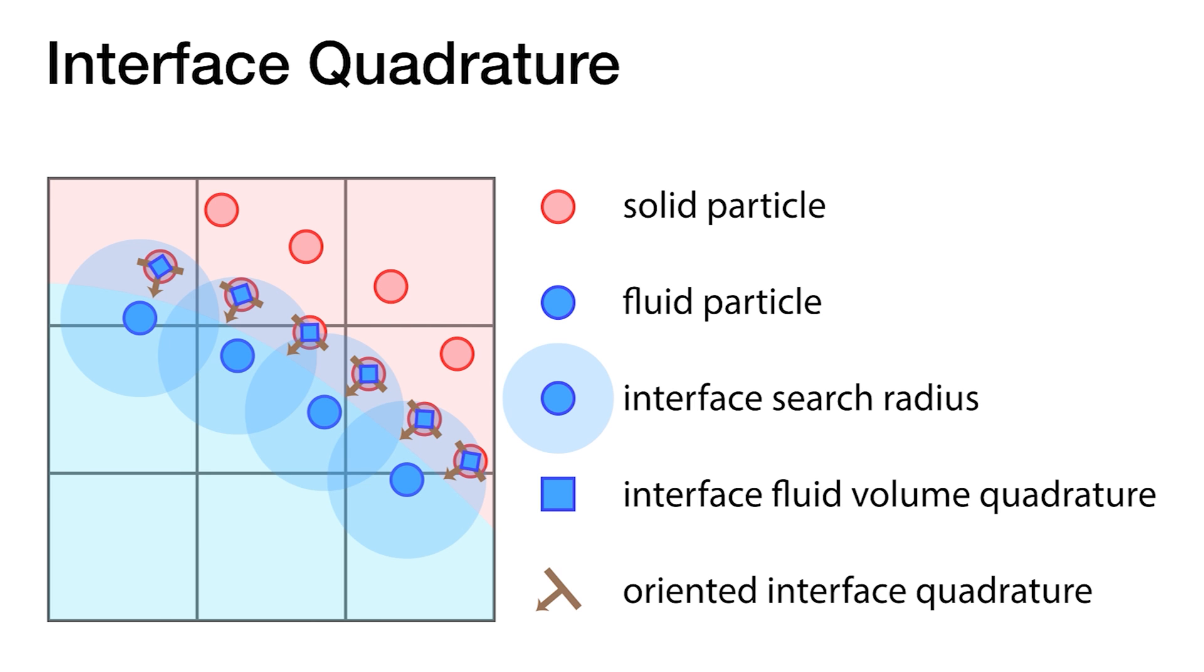Interface quadrature points are sampled directly at solid particle locations with area and normal information. Additional fluid volume quadratures are also sampled at this location. In this way, we guarantee that the fluid degrees of freedom on the grid will have kernel support at IQ points.